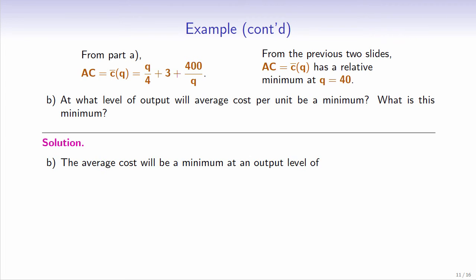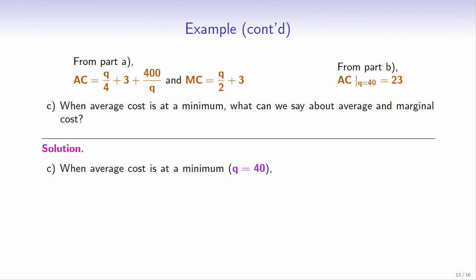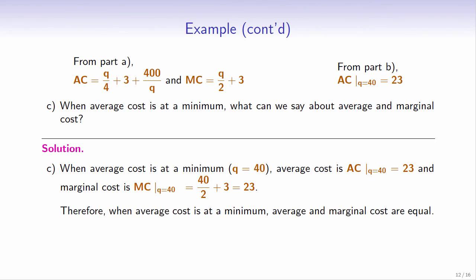Therefore, average cost will be a minimum at an output level of q equals 40 with a minimum average cost of 23. For Part C, when average cost is at a minimum, that is when q equals 40, average cost is 23. Marginal cost will be 40 over 2 plus 3, which also equals 23. Therefore, when average cost is at a minimum, average and marginal costs are equal.